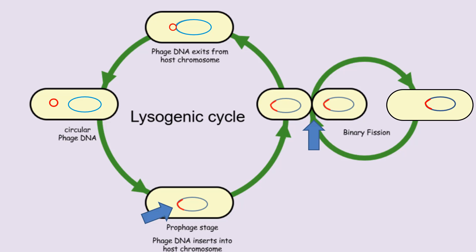During this time, not one new virus particle is made and the host cells are completely normal and healthy. At one point, though, an environmental stimulus will induce the host to remove the prophage from its chromosome and revert it back to its circular independent form. At this point, the prophage ceases to exist, and this will mark the end of the lysogenic cycle with the beginning of a new lytic cycle.